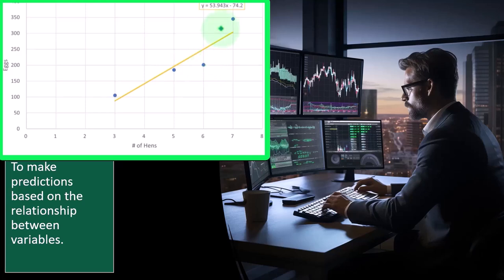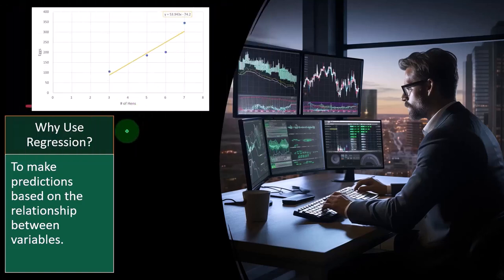But then that last one, going from six to seven, you had a high producing hen over here. So I can look at the trend line and say, how many hens would I need to produce so many eggs?